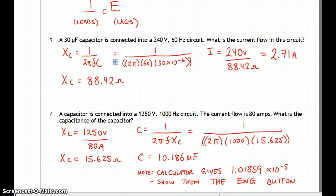So we'll take the 1,250 volts divided by the current, and that will give us the reactance of 15.625. Then we pump that into the capacitance equation, and we have 1 divided by 2 times pi times 1,000 times 15.625, and it gives you 10.186 microfarads.